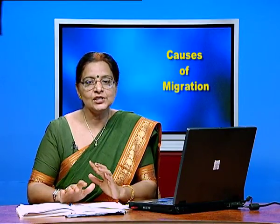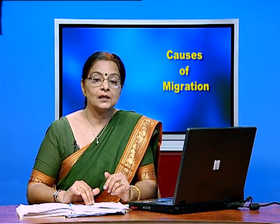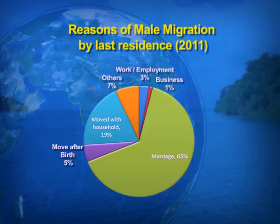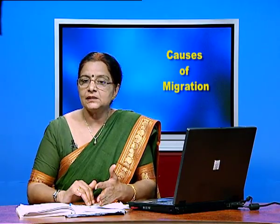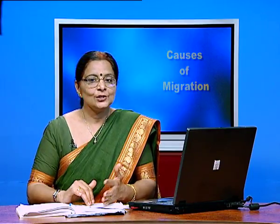You can well differentiate between the causes of male and female migration. The second largest migration under females is when they move with their households — the whole family shifts from one place to another. Movement after birth is only 5 percent under females. Surprisingly, in this visual you cannot find education as a cause of female migration, because in India, in rural areas, parents do not prefer to send their daughters for higher education. So migration of females for education purposes is totally zero.